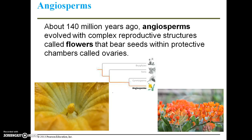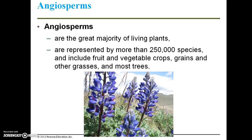Angiosperms are the flowering plants and they evolved about 140 million years ago. They have complex reproductive structures called flowers that bear seeds within protective chambers known as ovaries. Angiosperms are the great majority of living plants — most plants you see on a daily basis are angiosperms. They are represented by more than a quarter of a million species and include fruit and vegetable crops, grains and other grasses, and most trees.